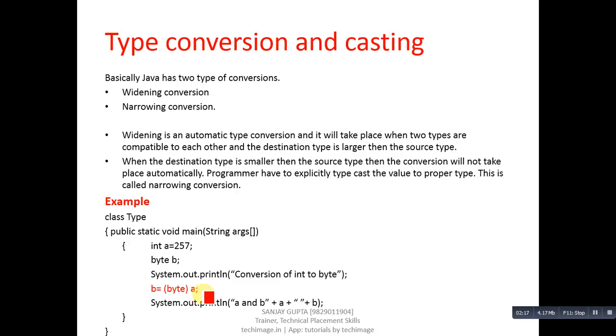a, which is of integer type, we are trying to convert into byte. So this is explicit conversion. a will convert into byte and the result will be stored into b. Then with the help of System.out.println, both the values of a and b are displayed on the console.